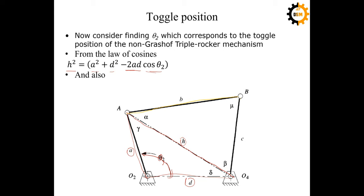Similarly, applying the law of cosines to the second triangle — triangle a-b-o4 — for the angle mu, the equation is: x² = b² + c² − 2bc·cos(mu). Here mu is the transmission angle. We have also labeled the remaining angles of the triangles as alpha, beta, gamma, and delta, just to identify all angles of the triangles.